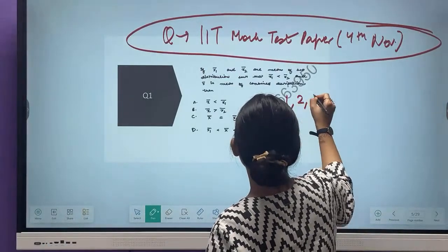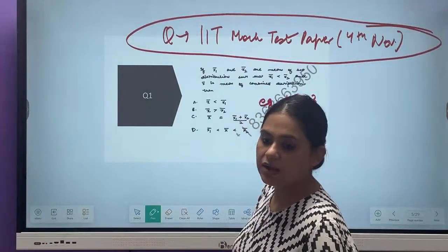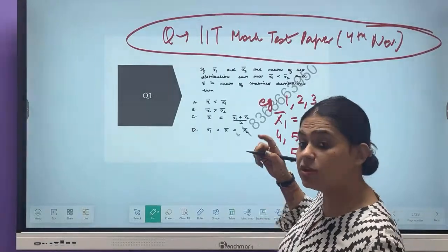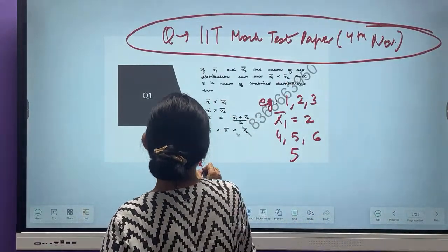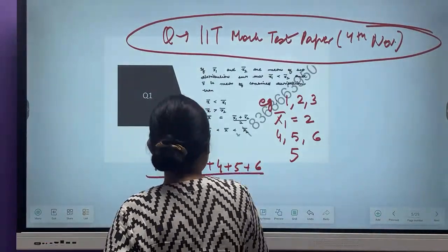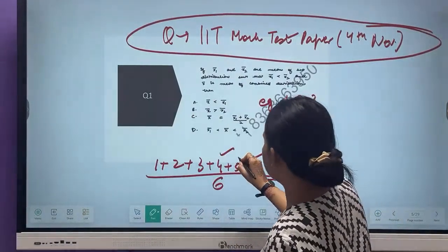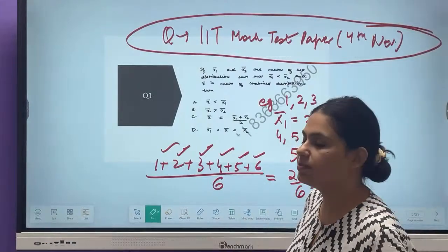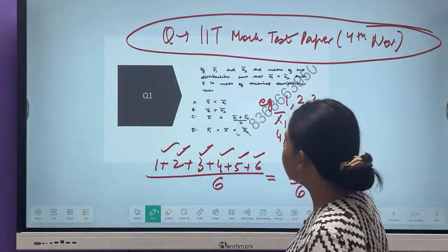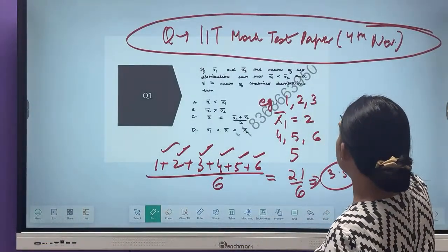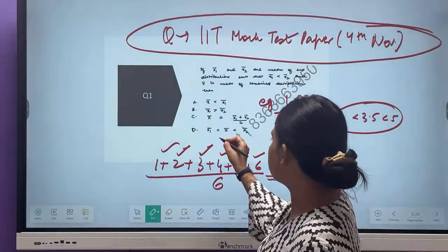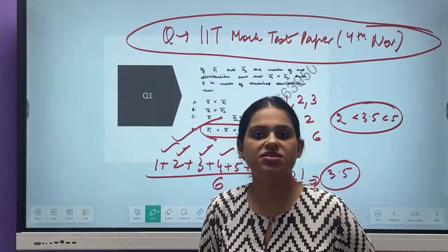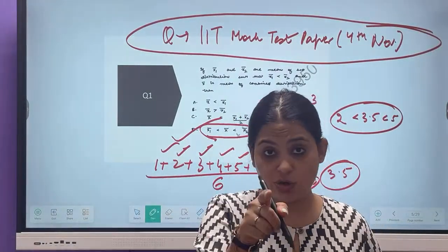This mean will be 2. Let's take series 2 as 4, 5, 6. Its mean will be 5. What will be the mean of all six numbers together? 1 plus 2 plus 3 plus 4 plus 5 plus 6 divided by 6. So this is going to be 21 divided by 6, which is 3.5. So what can we see? We can see that this 3.5 is between 2 and 5. So X bar is between X1 bar and X2 bar. This is what I am seeing here. So answer is C. That's the answer to this question.